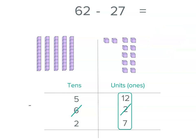In our units place, 12 minus 7, 1, 2, 3, 4, 5, 6, 7, leaves us with 5 units.